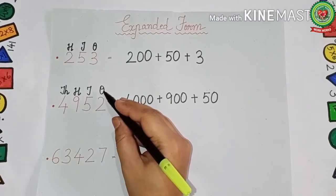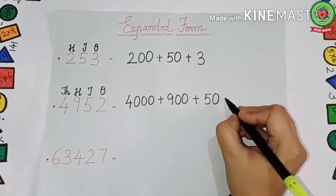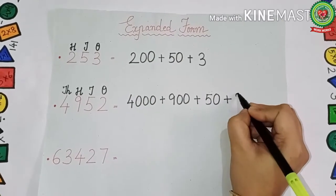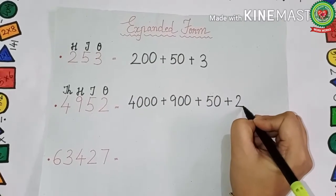Two is under ones, and ones has no zero, so we simply write 2. So 4952 = 4000 + 900 + 50 + 2.